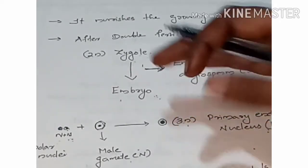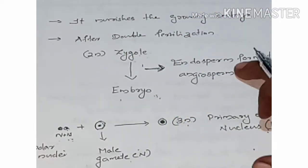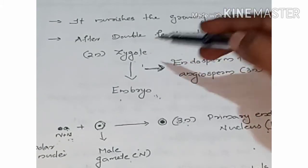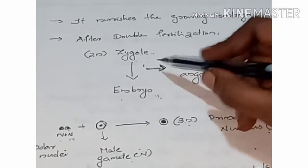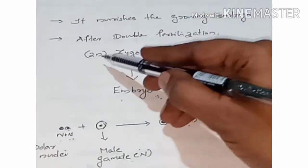After double fertilization, the primary endosperm cell is formed.